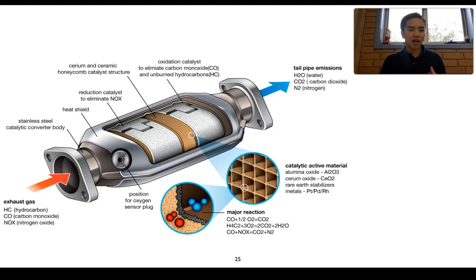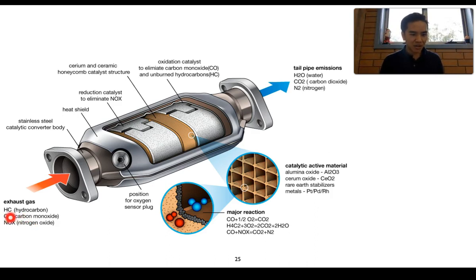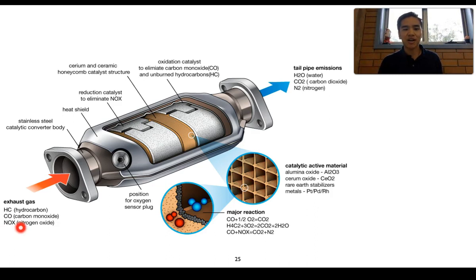This diagram shows what we classify as a three-way catalytic converter. We call it three-way because it helps convert three different pollutants — namely carbon monoxide, oxides of nitrogen, and unburnt hydrocarbons — into less harmful by-products. In the diagram, unburnt hydrocarbons, carbon monoxide, and NOx (representing nitric oxide and nitrogen dioxide) are all passed through into the converter.